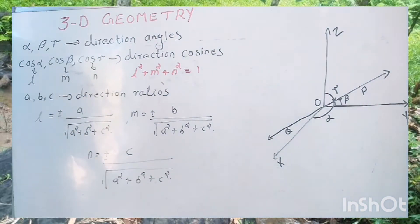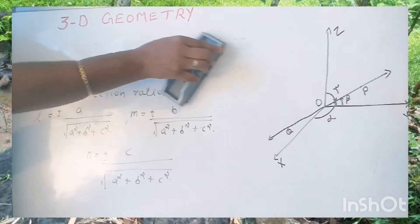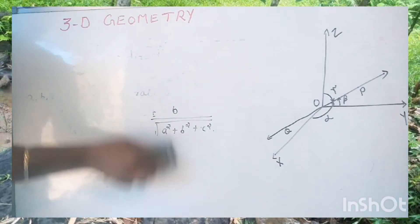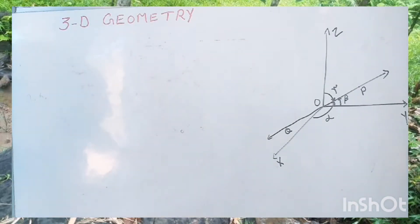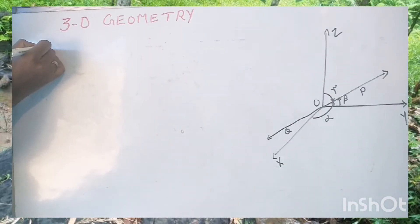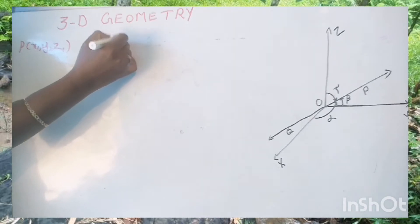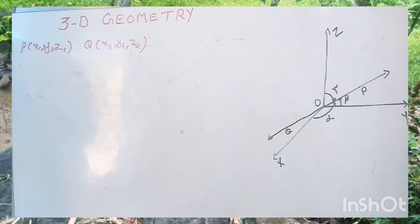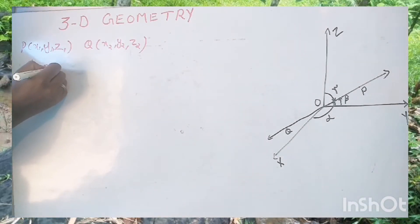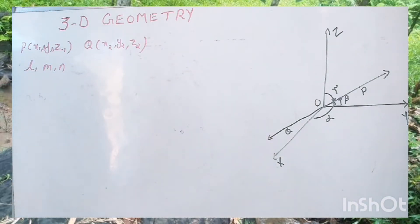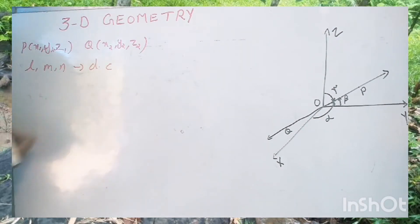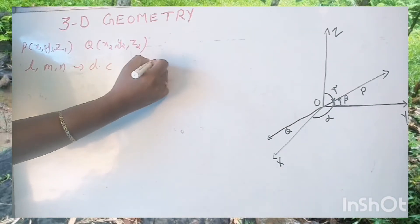Now suppose two points P(x1, y1, z1) and Q(x2, y2, z2) — since it is in a three-dimensional plane, we have three coordinates. Let L, M, N be the direction cosines of the line PQ.